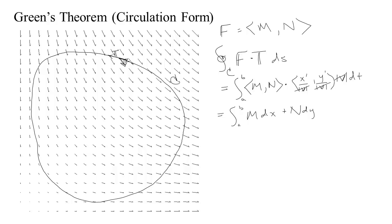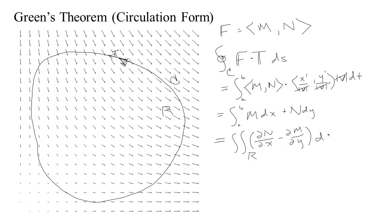The cool thing — what Green's theorem tells us — is that there's a relationship between that circulation and the integral over the region inside that closed curve. Green's theorem says the circulation integral, however you write it, can be thought of as a double integral over the interior of the region. What you integrate over the interior is (∂N/∂x − ∂M/∂y) times the area element. This is the circulation form of Green's theorem.